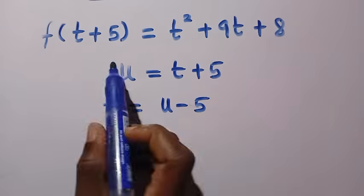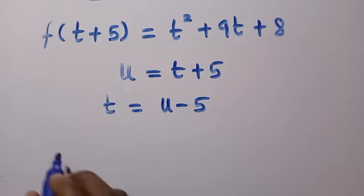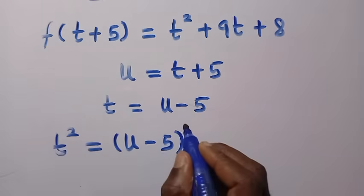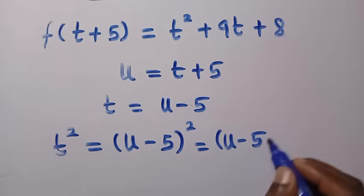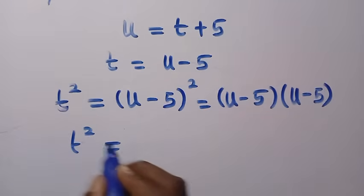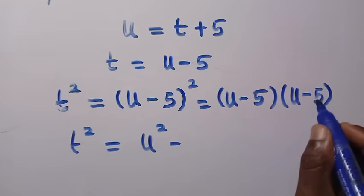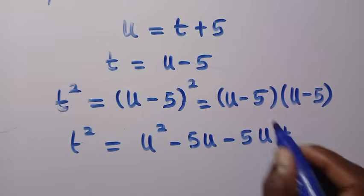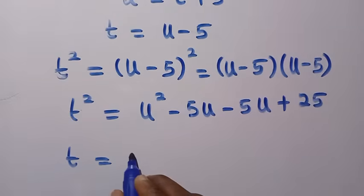We need t squared, so we square both sides: t squared equals (u minus 5) squared. Expanding by writing it as (u-5)(u-5), we get u squared minus 5u minus 5u plus 25, which equals u squared minus 10u plus 25.